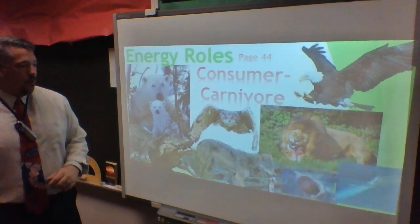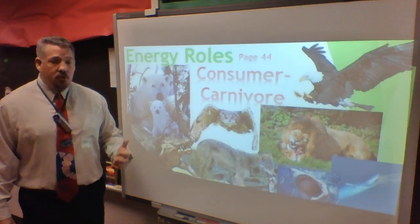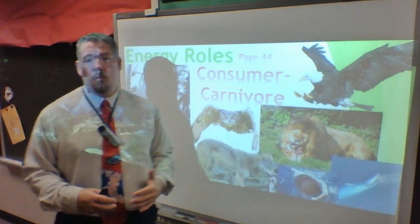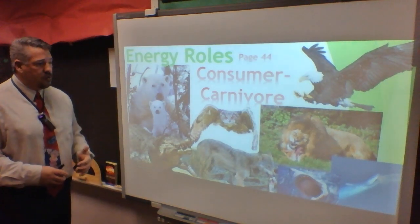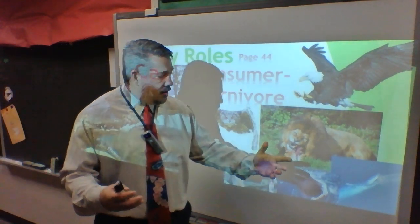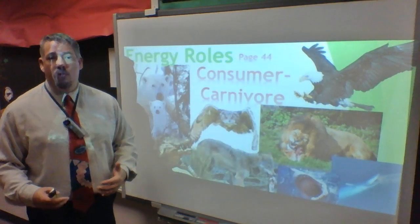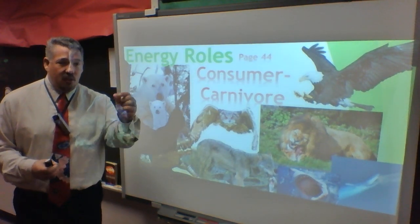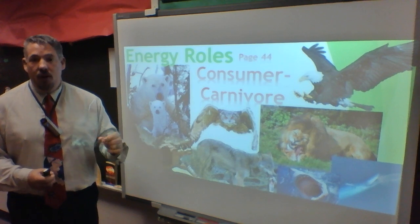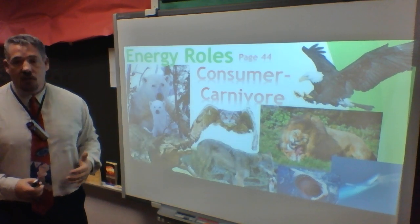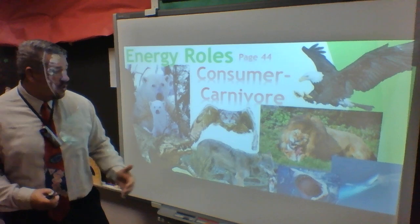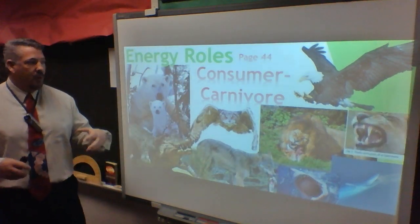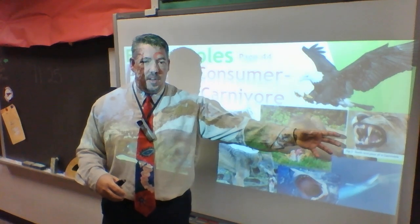We also have carnivores in the ocean. The shark is the most common, but whales are carnivores too — all they eat is krill, which are tiny shrimp that eat phytoplankton and algae. So even though whales don't have sharp gnarly teeth, they are classified as carnivores. They use baleen to filter krill from the water.